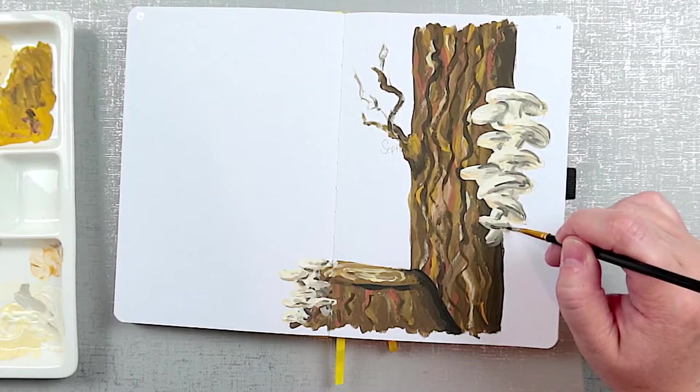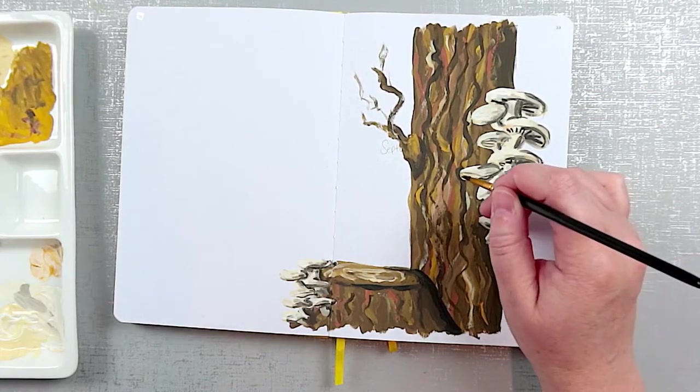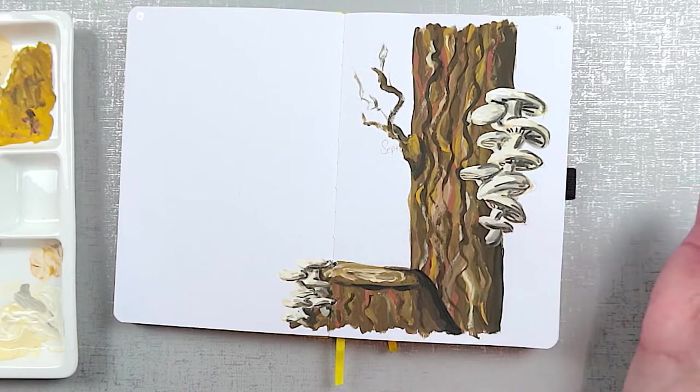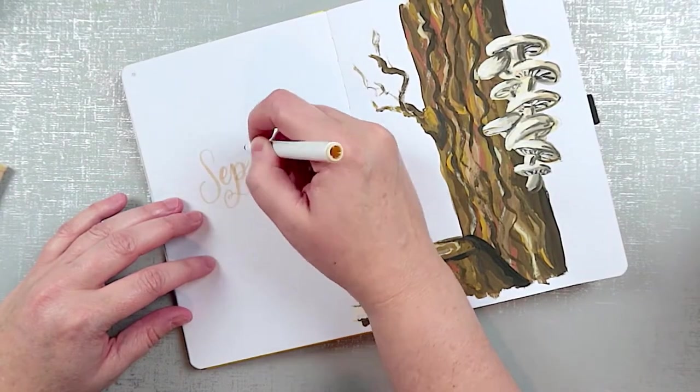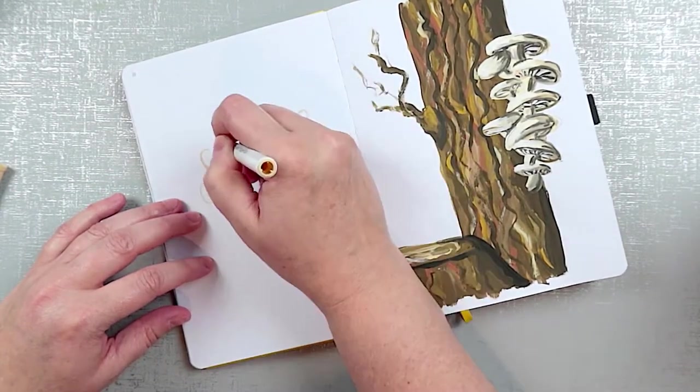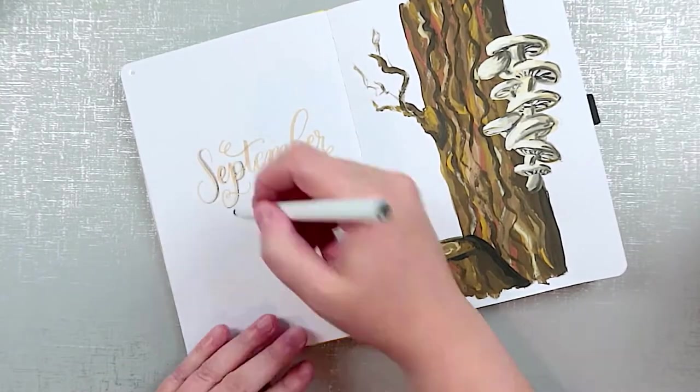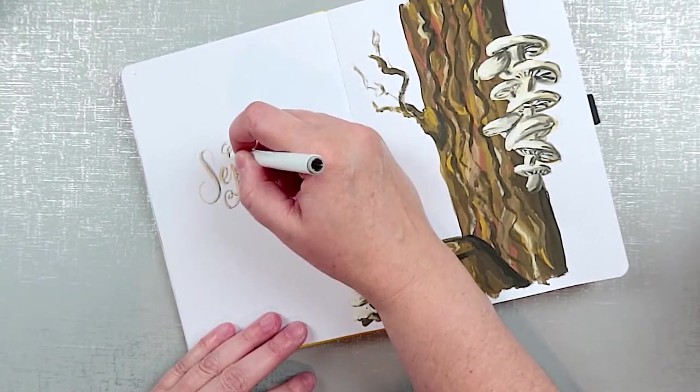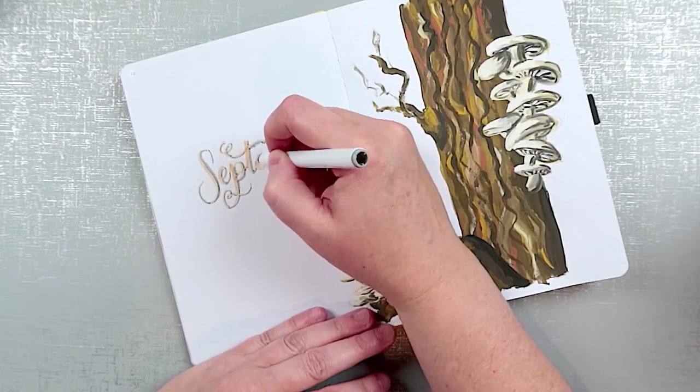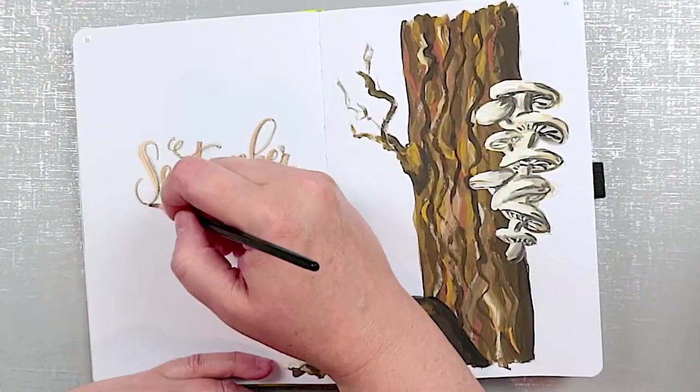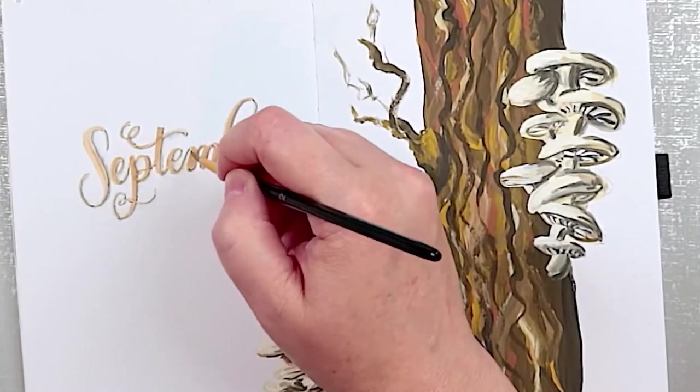Once I finish the mushrooms and everything is dry I decide to letter the month with a Crayola super tip marker. When you letter with super tips, yes it's possible to get the thick and thin lines but it's applied a little bit differently than a brush pen. I'll add a bit of gray as a shadow and then feather it out with a clean damp paint brush.